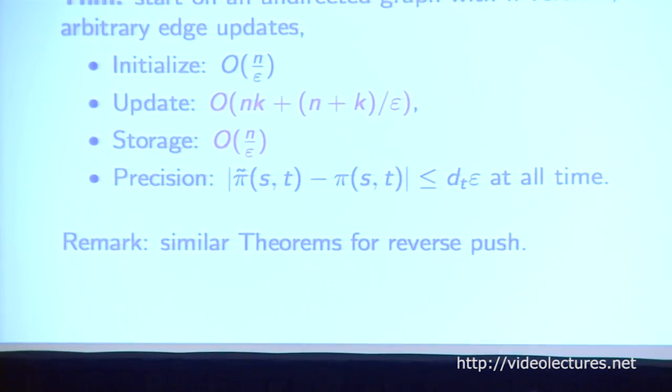In the same example, after the edge deletion, the residuals at B and C increased a little bit, while the residuals at A and D were not changed. The question becomes: since we have these changed residuals and want to reduce them, how much cost would it take? The main contribution of our work is an amortized analysis of this dynamic local push algorithm. We proved that for an arbitrary undirected graph with n vertices and k arbitrary edge updates, the amount of time needed to update is linear in k, and the amount of storage is n over epsilon.